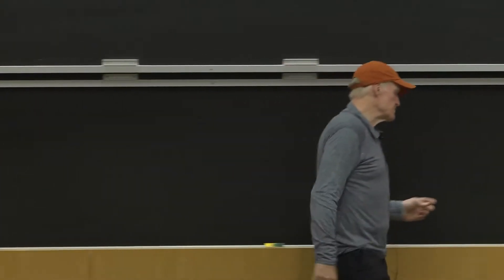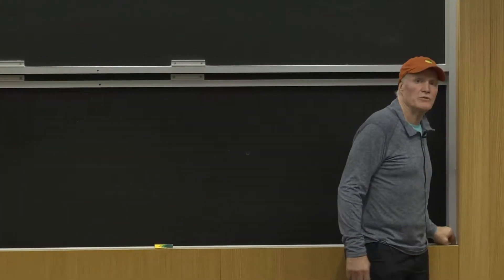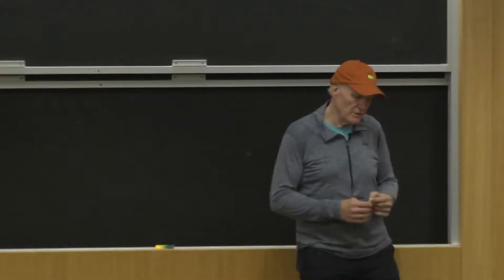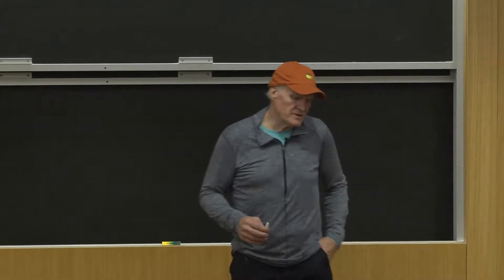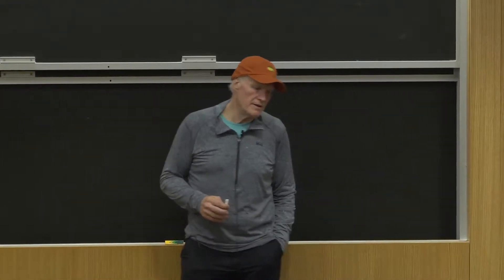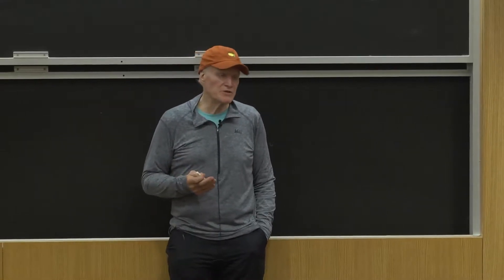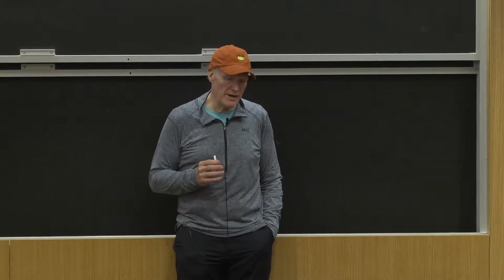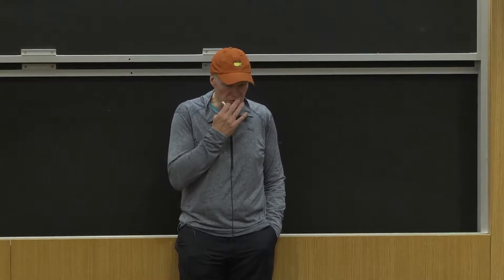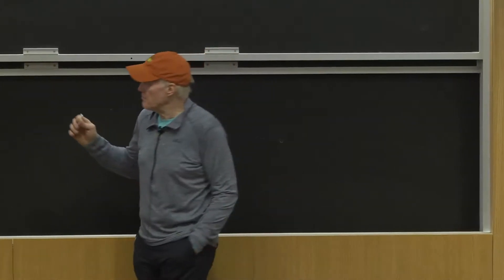Last time we looked at the classical utility maximizing model and talked about getting from there to the Marshallian demand curves, with a stop along the way at the first order conditions. Let me put that back up on the board.